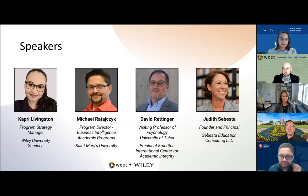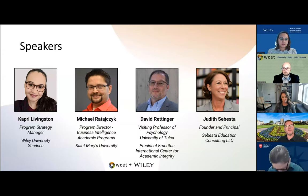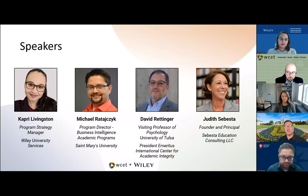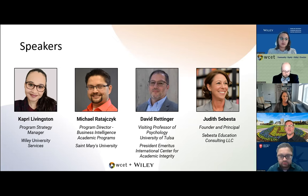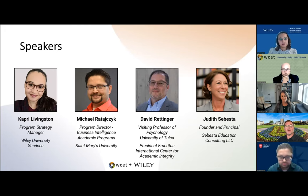Hi, I'm David Rettinger. I'm on the faculty at the University of Tulsa — applied professor of psychology. I served in the past as president of the International Center for Academic Integrity and I've been working in the academic integrity space as a scholar, as an administrator, and as a teacher for about the last 20 years. I've been giving a lot of thought to what academic integrity looks like, and of course everything's been turned upside down in the last six months with the new generative AI tools. So it's great to be here.